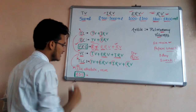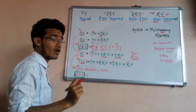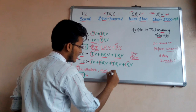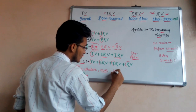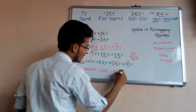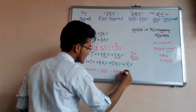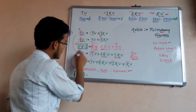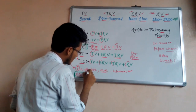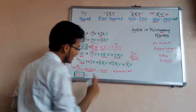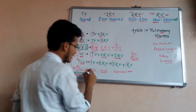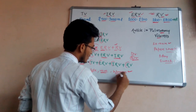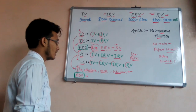Regarding vital capacity, it is higher in athletes than in a normal person, and it is higher in men compared to women. This is very important from an examination point of view: vital capacity is higher in athletes compared to normal individuals, and higher in men compared to women.